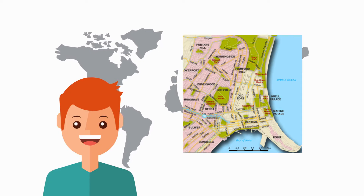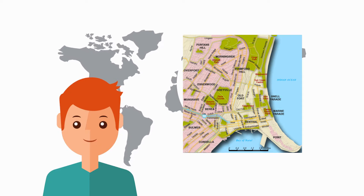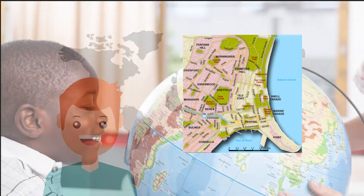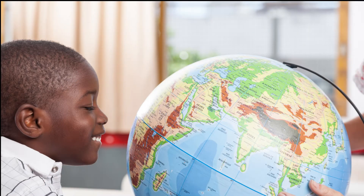The scale of a map is influenced by the size of the area it covers — generally, the larger the area, the smaller the map scale. Maps are like accurate drawings of different parts of the world, and each type provides unique information about the area it depicts. The scale of a map helps us figure out the actual size and distances between places or objects shown on the map.